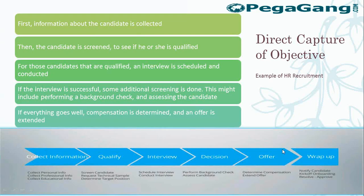Another example is an HR recruitment scenario. You collect a candidate's information, then do screening. Once screening is done, you schedule and conduct the interview. After that, you perform background verification. If everything checks out, you determine the compensation and release the offer, then wait for the candidate to join the organization. These are the different ways we handle a case in Pega.